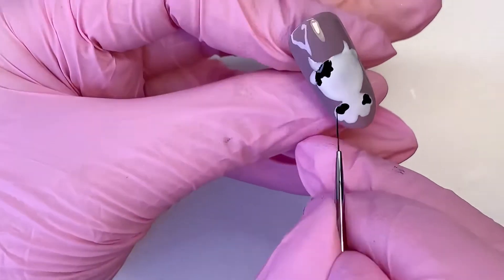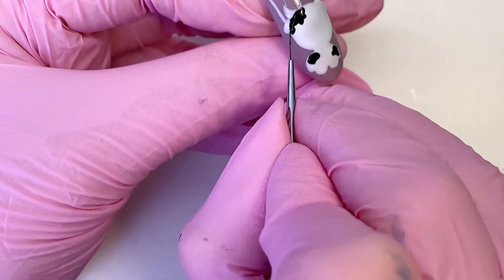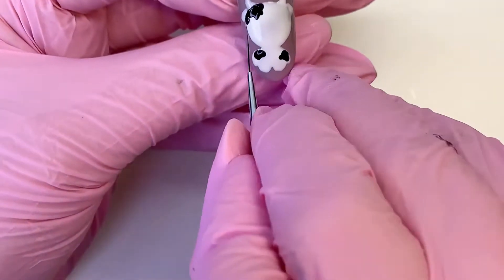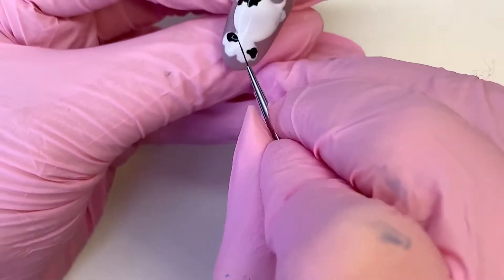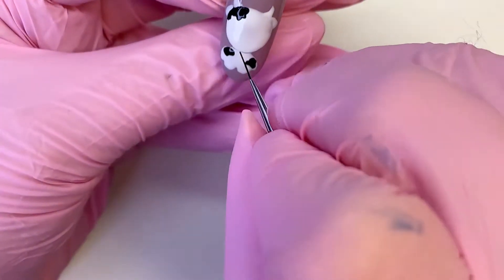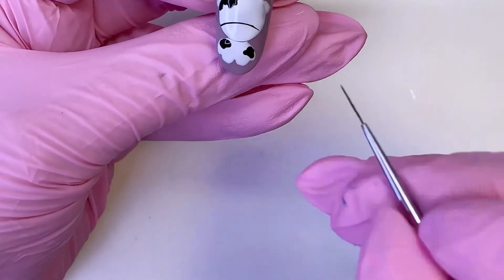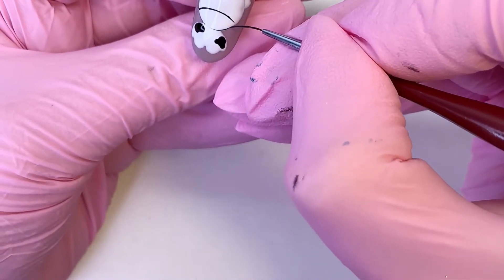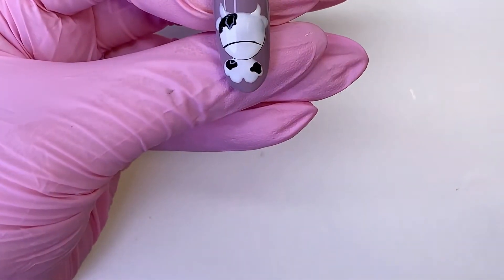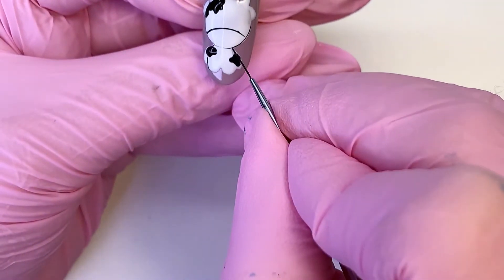And then we will take a brush for fine lines and carefully outline the head. Draw a nose, and also we will draw the paws and legs.